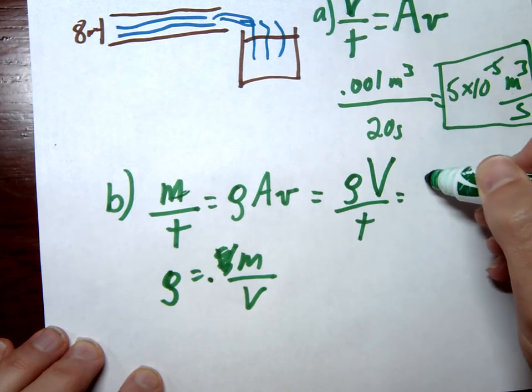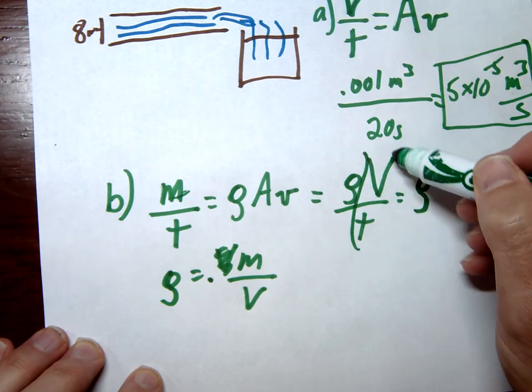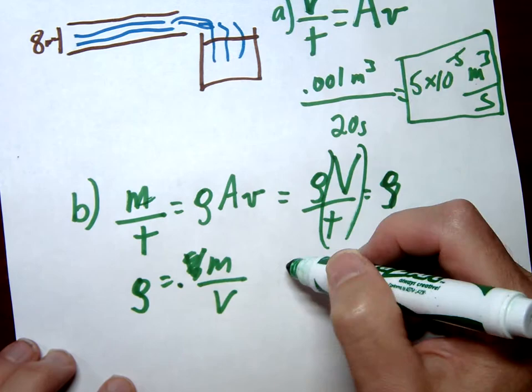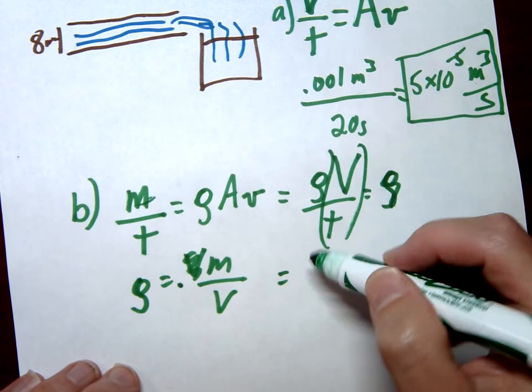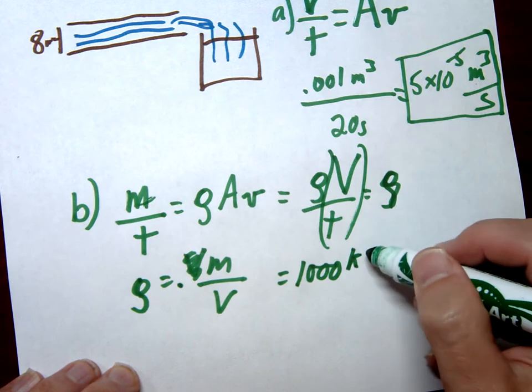Or if you look at this, this would simply be density times our volume flow rate. Alright, so in this problem we know the density is of water.